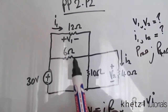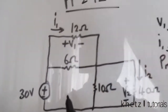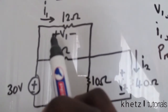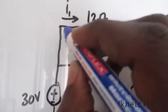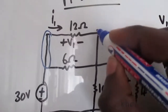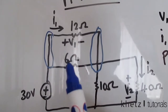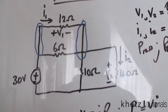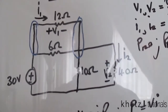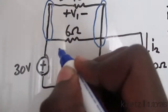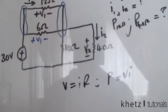Let's simplify this circuit. We want to find v1, which is the voltage across the 12 ohm resistor. If you look here, we have two nodes shared between the 12 ohm and the 6 ohm. For resistors in parallel — which is the case for two shared nodes — the voltage is the same. So the voltage across the 6 ohm is also v1.